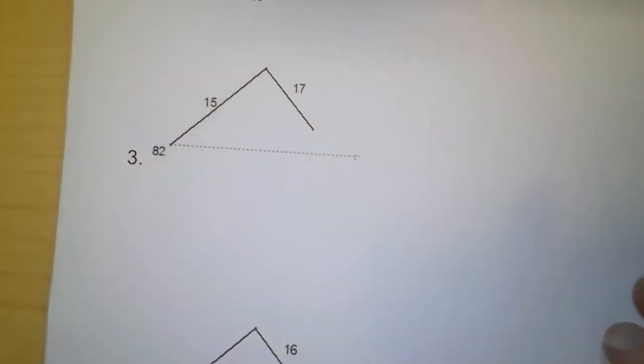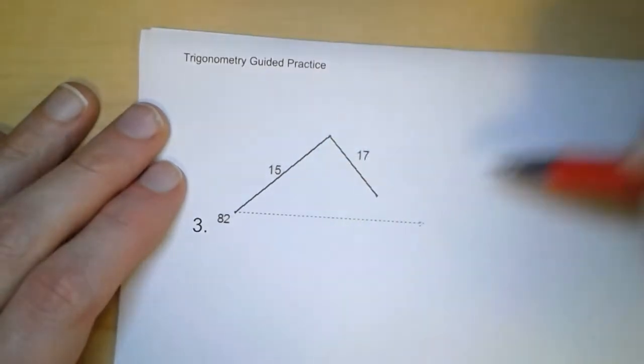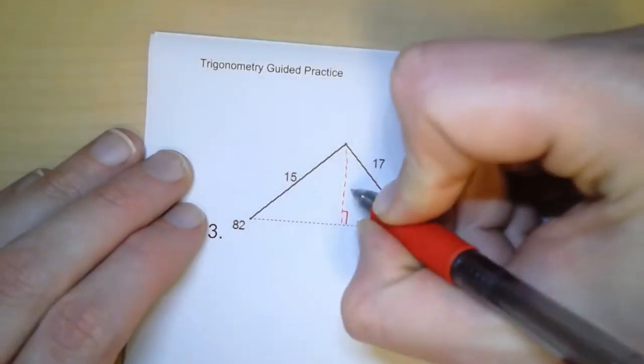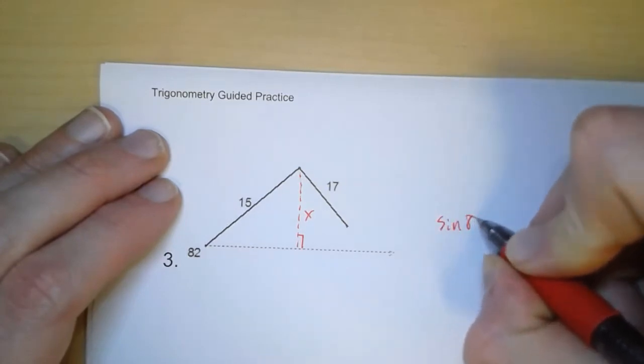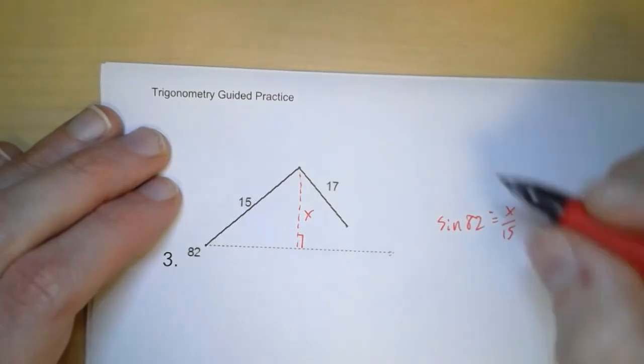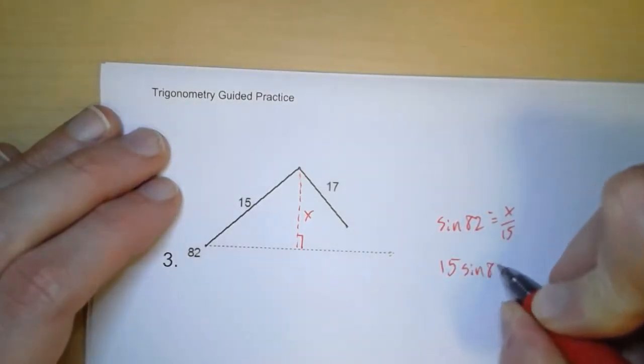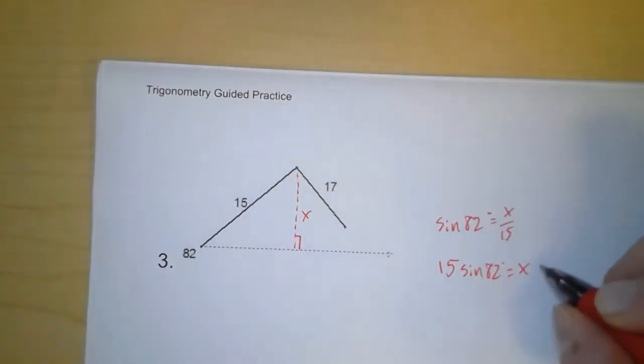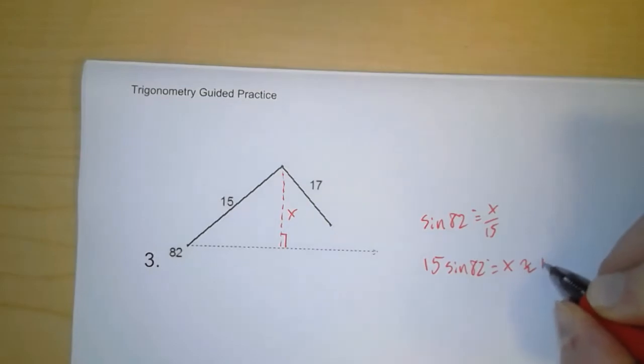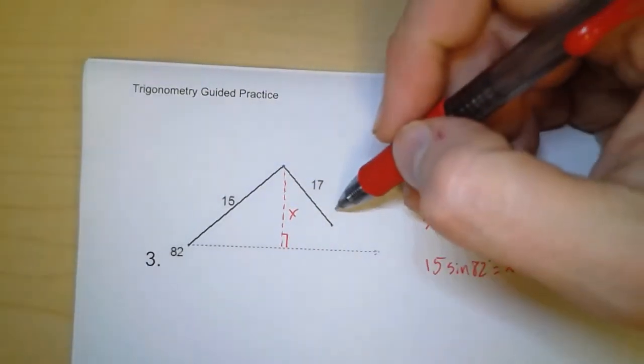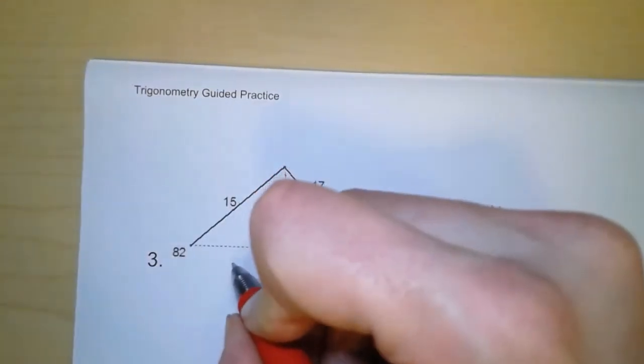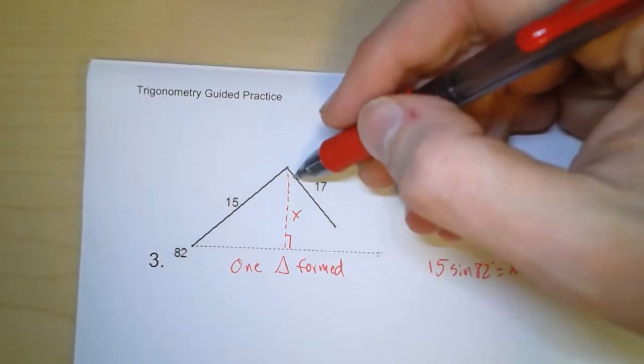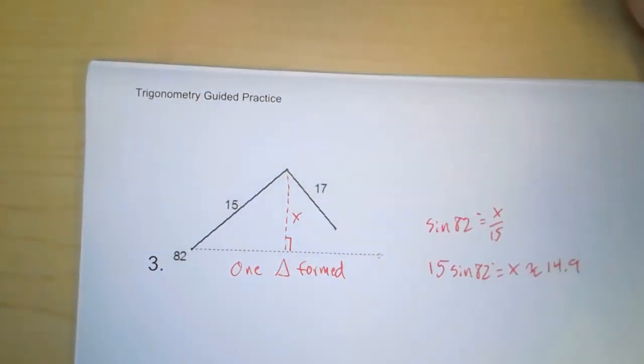Okay. So on the next one, here we're given this angle and these two side lengths. And so if I draw down the height and I ask, sine of 82 degrees equals x over 15. So I multiply and I get 15 sine of 82 degrees equals x. And on our calculator, we get approximately 14.9. So 17 is definitely long enough to reach. So I can make one triangle. Now I'm not sure whether this is a right angle, an obtuse angle, or an acute angle. So I'm just going to say one triangle is formed here.